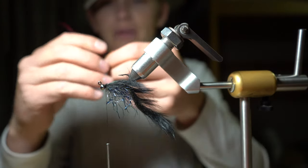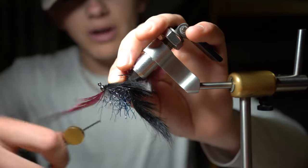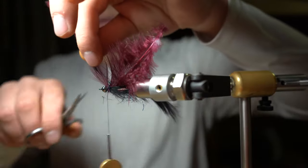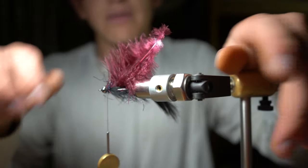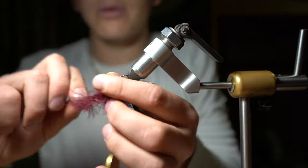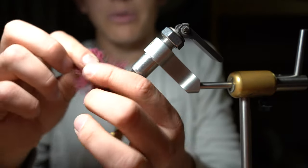I'm going to choose a spot right where that hackle transitions to the material that's similar to marabou and tie it in. Trim that piece of hackle, and now I'm going to wrap only two to three times - I only need two here unless you want to make a very fluffy collar.